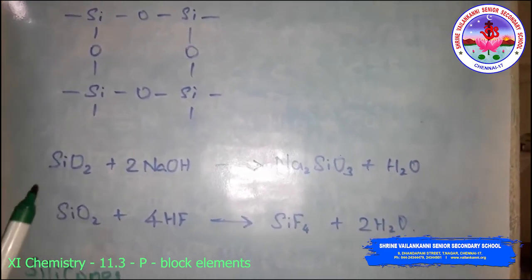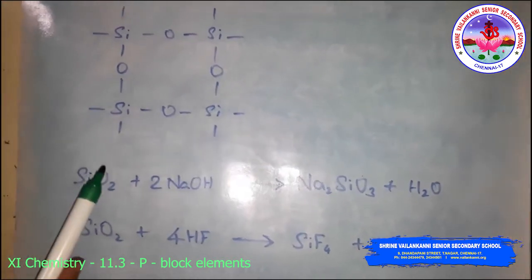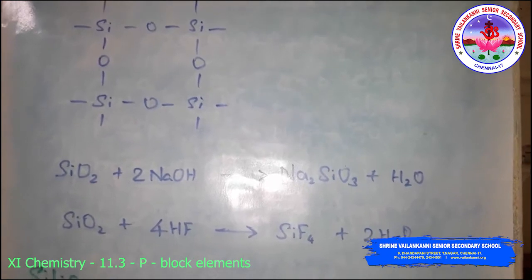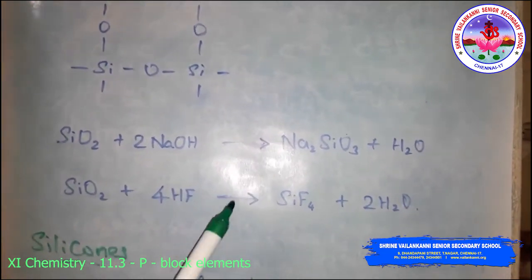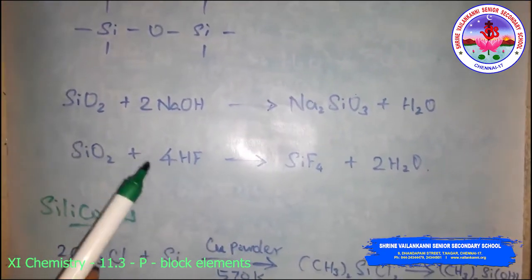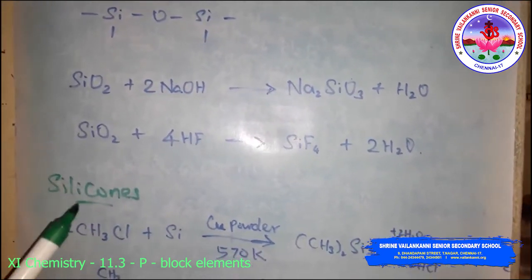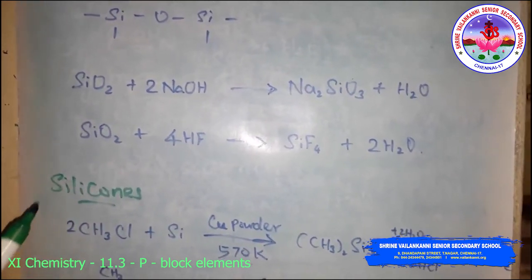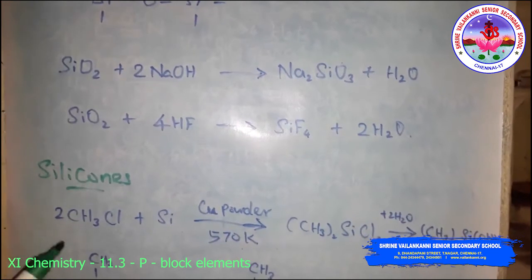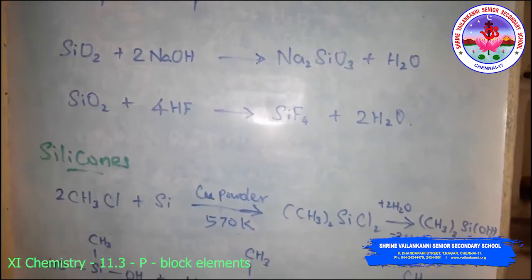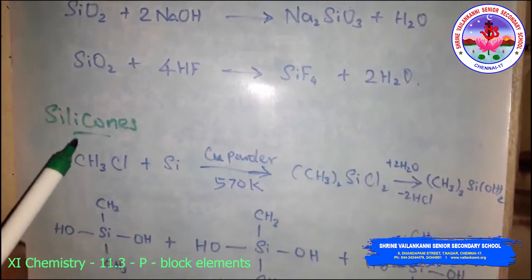Silica is almost non-reactive due to the very high Si–O bond enthalpy. It resists attack by halogens, dihydrogen, and most acids and metals even at elevated temperatures. However, it is attacked by sodium hydroxide and hydrogen fluoride to form sodium silicate and silicon tetrafluoride, respectively. Quartz is extensively used as a piezoelectric material, making possible extremely accurate clocks, and is used in modern radio, television broadcasting, and mobile radio communications. Silica gel is used as a drying agent and a support for chromatographic materials and catalysts. Amorphous forms of silica are used in filtration.